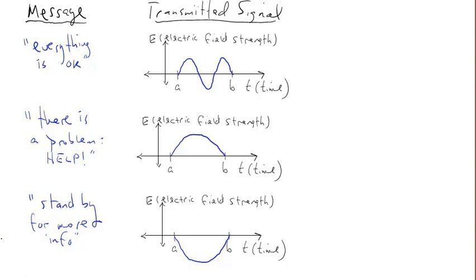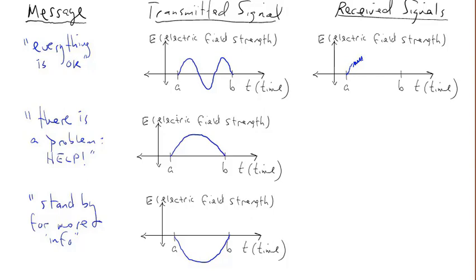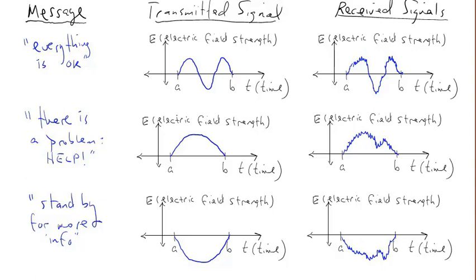The signals travel through the airwaves and get corrupted by noise, so the received signals don't look the same. The received signals have some qualitative features of the transmitted signals but have been corrupted by noise. The job of the receiver is to distinguish between the received signals even though they've been corrupted. If the top received signal arrives, the receiver will decide it corresponds to 'everything is okay.' If the bottom signal arrives, the receiver decides it corresponds to 'standby for more info.'